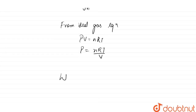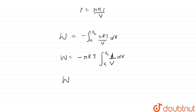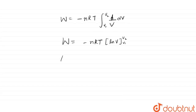Putting this value in, work done equals minus the integral from V1 to V2 of (nRT/V) dV. Taking nRT outside the integral, this becomes minus nRT times the integral from V1 to V2 of (1/V) dV. On integrating, work done equals minus nRT × ln V evaluated from V1 to V2, giving W = -nRT ln(V2/V1).